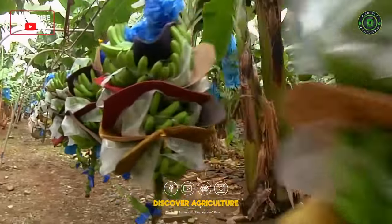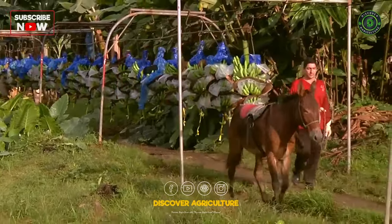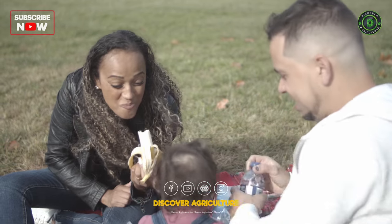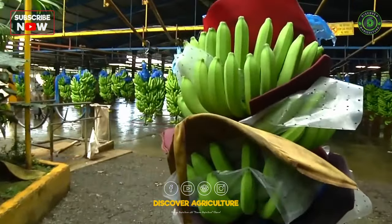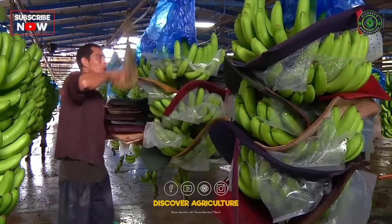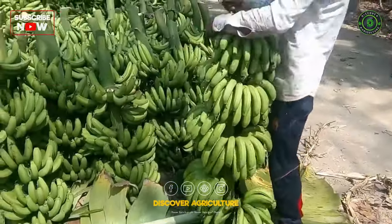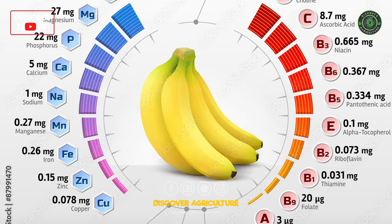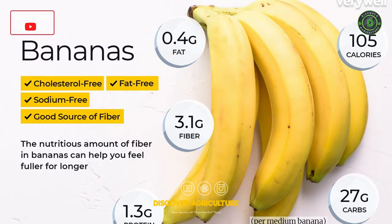Banana farming is a significant branch of agriculture that involves the cultivation of bananas, which are among the most popular and widely consumed fruits globally. It is a crucial agricultural practice in tropical and subtropical regions due to the climatic conditions required for successful growth. Bananas belong to the genus Musa and are rich in nutrients like potassium, vitamins, and dietary fiber, making them a staple food for millions worldwide.